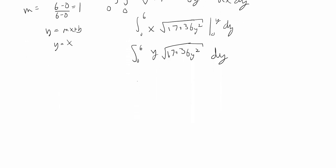Here we're going to use u substitution. So we have that u equals 17 plus 36y squared. If we take a du, that's going to give us 36 times 2y dy. 36 times 2 is 72. So if we have y dy on one side, we're going to have du over 72 on the other side.